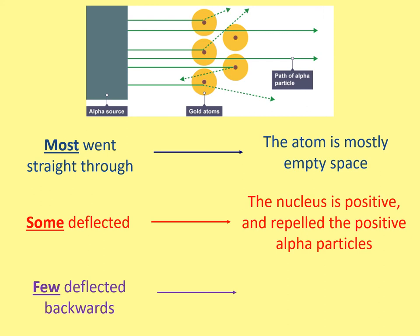The last result is that few deflected backwards. The conclusion is that the nucleus is very small and very dense. The nucleus is 10,000 times smaller than the atom — that's why only a few came back. It's very dense because those alpha particles hit the nucleus and came back the other way, meaning lots of mass is concentrated in the nucleus. The protons and neutrons have loads of mass compared to electrons, all concentrated in the middle, while the electrons fly around the outside with hardly any mass and lots of empty space.